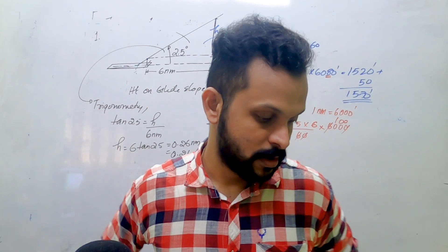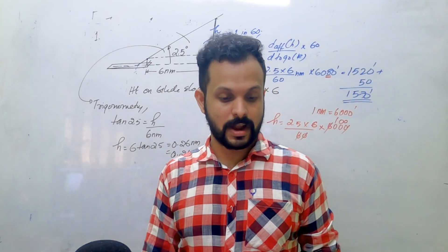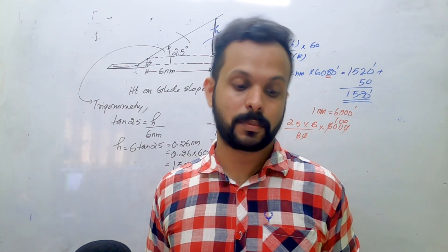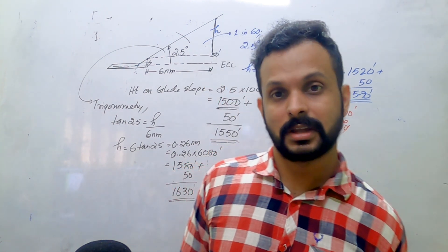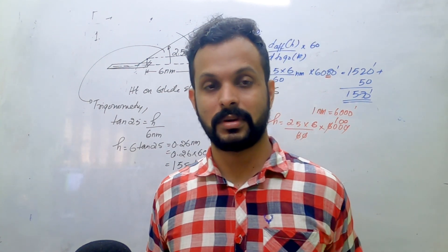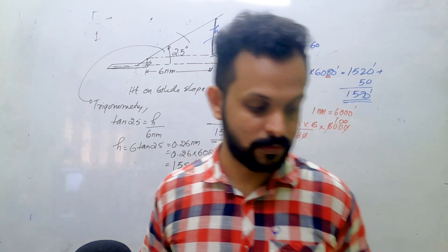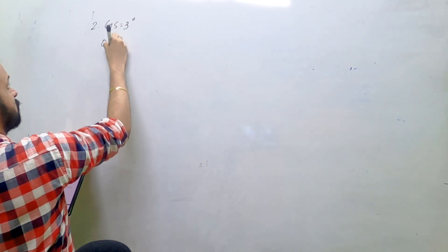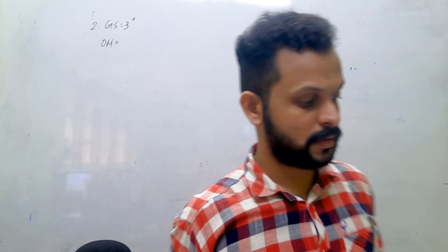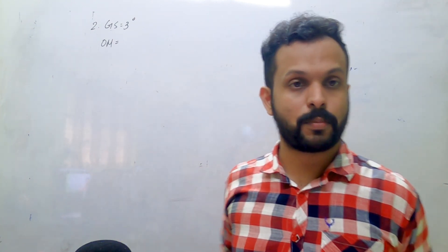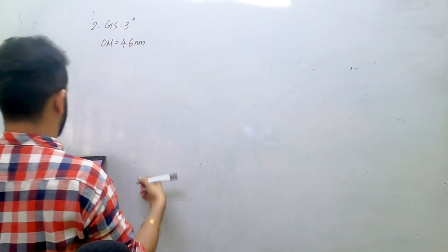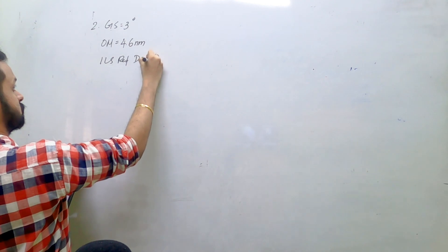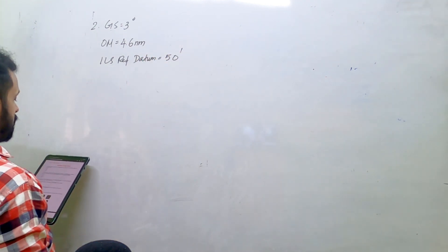Next question: the outer marker of an ILS with a three degree glide slope is located 4.6 nautical miles from the threshold. Assuming a glide slope reference height of 50 feet above the threshold, find the approximate height of an aircraft passing the outer marker. One common mistake in these questions is forgetting to add the 50 feet ILS reference, since not all questions include it.